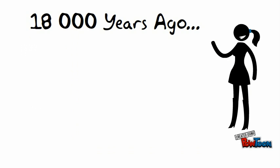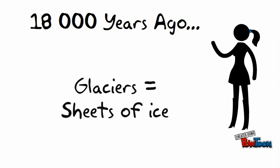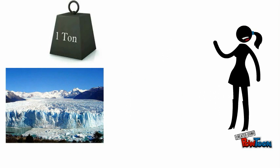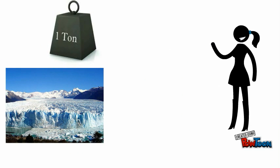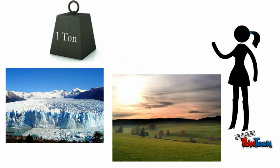Approximately 18,000 years ago, glaciers covered the Cordillera region. Glaciers are sheets of ice that can be up to 2 kilometers thick. The weight of these glaciers caused the land to sink, which allowed the land in the interior plains to become flat with some rolling hills.